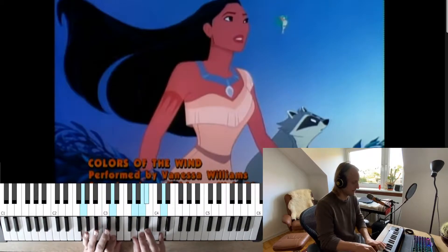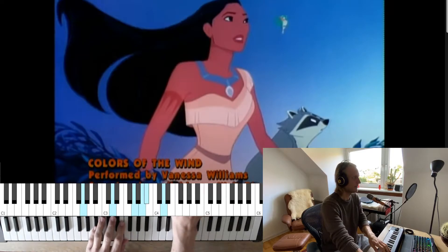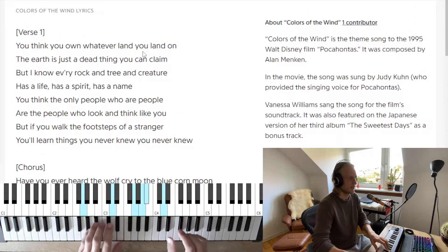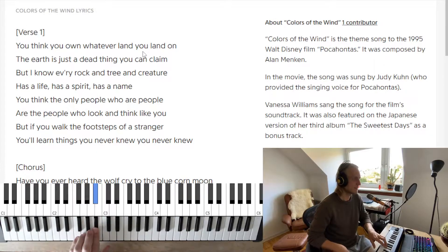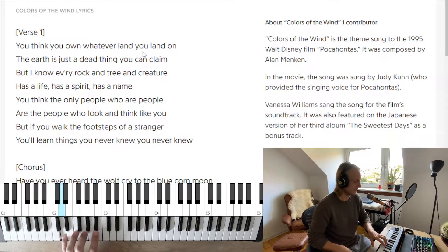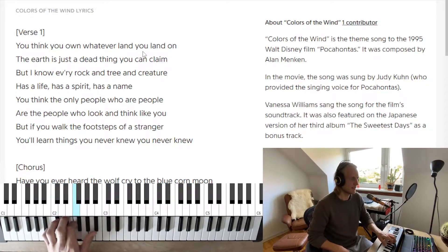Welcome, we're playing Colors of the Wind. Let's start by learning the left hand. The lyrics 'you think you own whatever land you land on' go over B flat to G, and 'the earth is just a dead thing you can claim' goes over B flat to D. But I know every rock and tree and creature has a life, has a spirit, has a name.